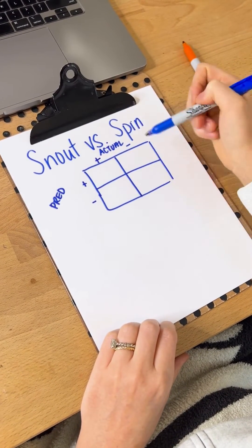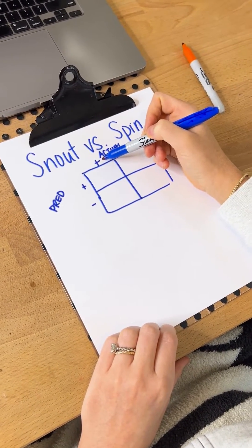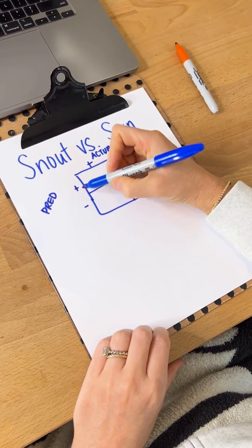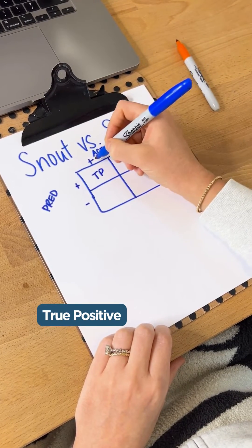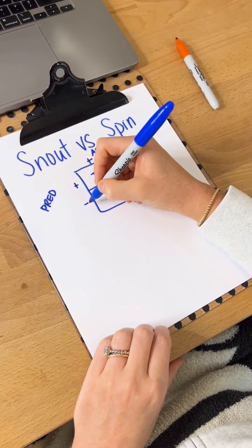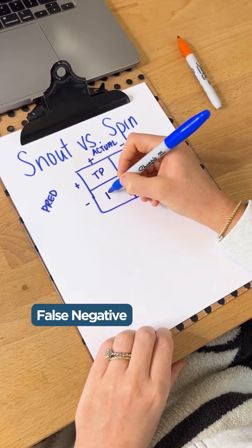So putting this all together, if someone actually has the disease and the test predicted that they did, this is called a true positive. If they actually had it and the test predicted that they didn't, this would be a false negative.